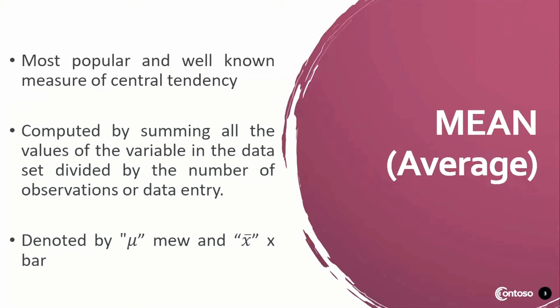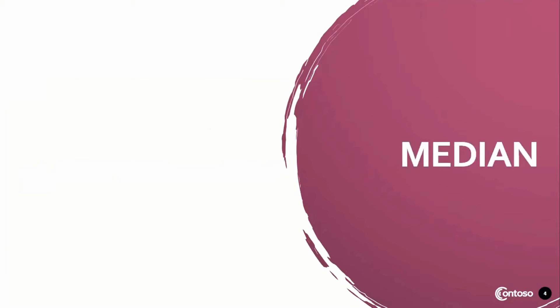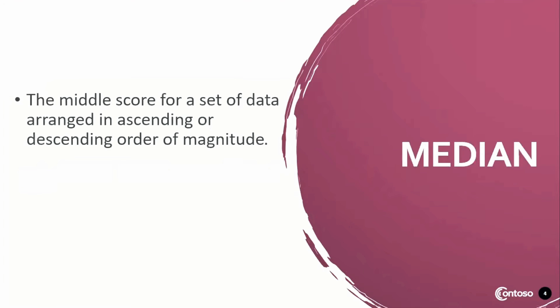The second measure of central tendency we have is the median. Median is the middle score for a set of data arranged in ascending or descending order of magnitude. It is denoted by md.